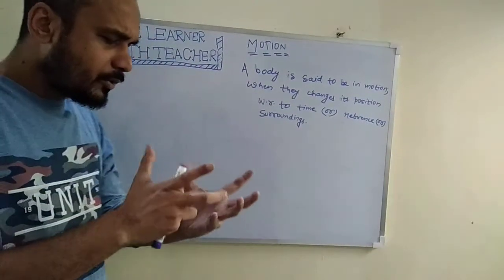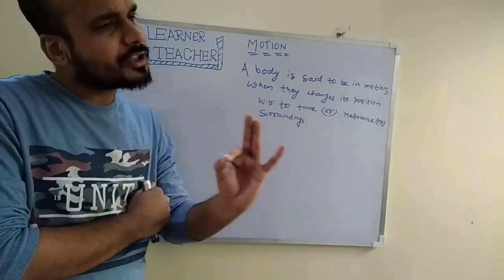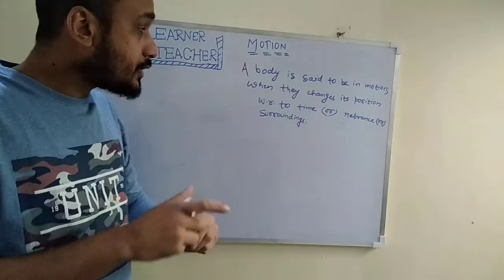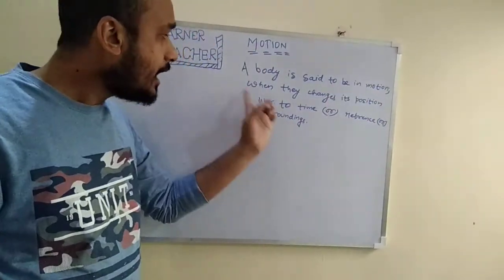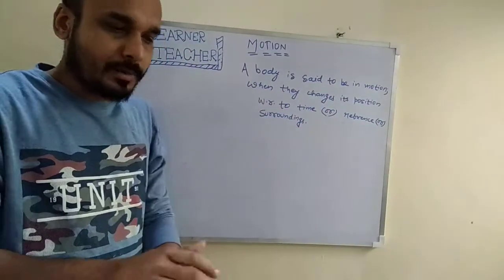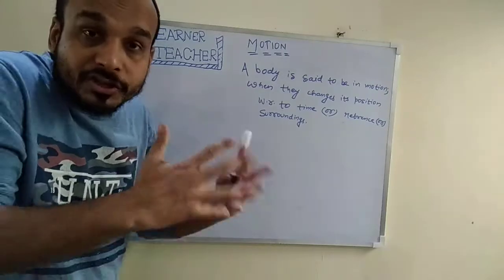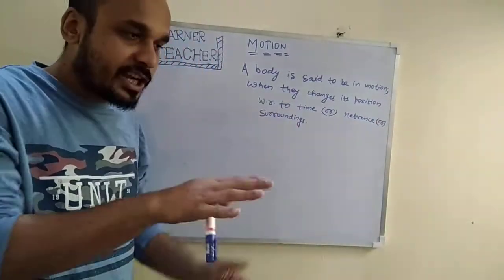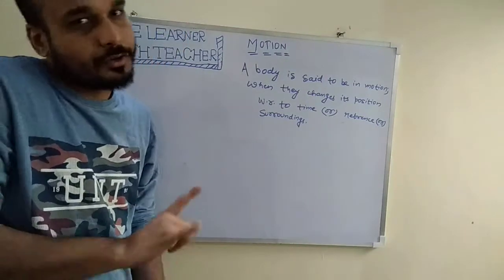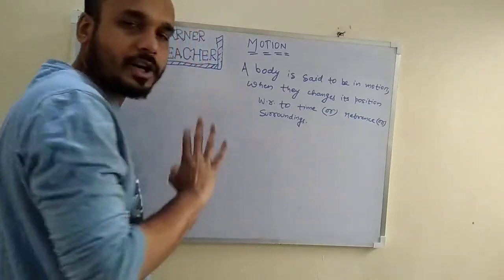What is motion? If we told you that you are at 9 o'clock here, do you think you are exactly at 9 o'clock without changing with the passage of seconds? No. It means a body is said to be in motion when it changes its position with respect to time. Suppose I am sitting on a chair — the chair is in some surroundings. Does the chair move without changing the surrounding? No. That means an object is said to be in motion when it changes its position with respect to time, reference, or surroundings.